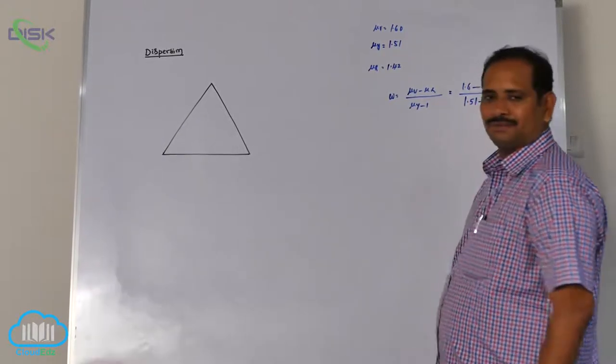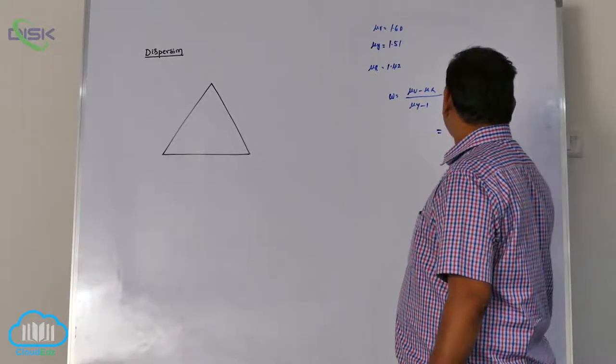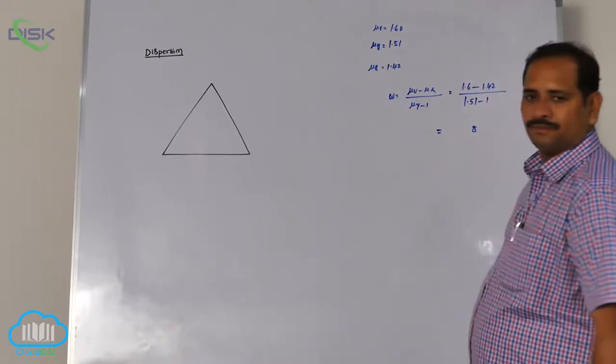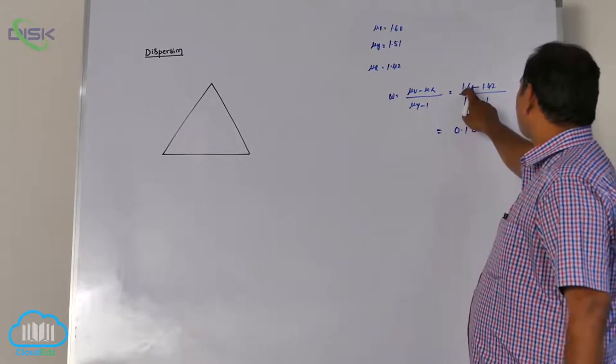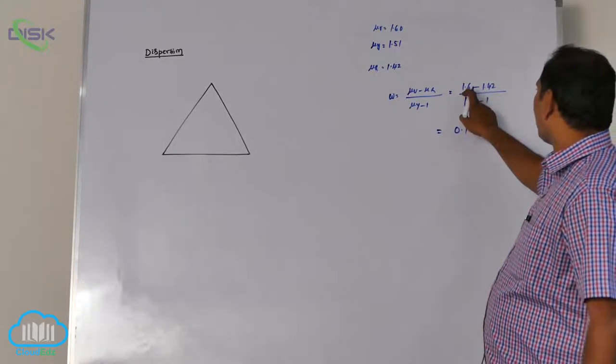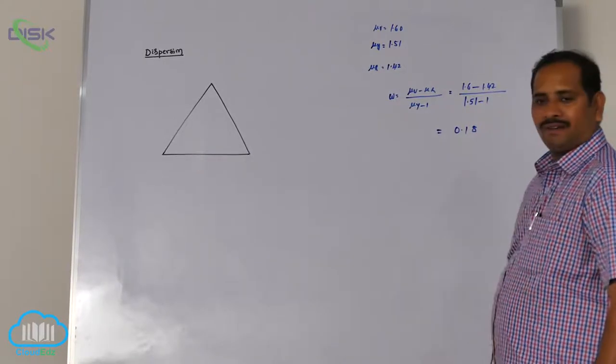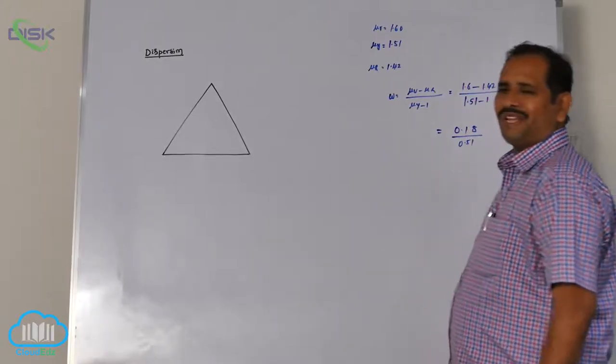So now that is 1.6 minus 1.42, that's 0.18, am I right? 6 minus that is 10, 10 minus 2 means 8, 5 left, 5 minus 4 is 1, so 0.18 by 0.51.